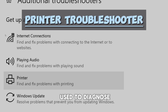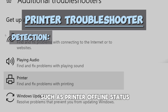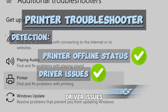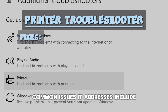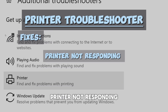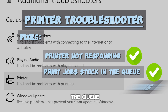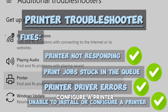The Printer troubleshooter is used to diagnose and resolve issues with printers and printing devices. It can detect problems such as printer offline status, driver issues, and print queue errors. Common issues it addresses include printer not responding, print jobs stuck in the queue, printer driver errors, and unable to install or configure a printer.